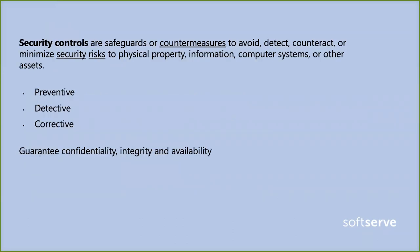Security controls are safeguards or processes that help you avoid, detect, and correct data breaches or attacks. There are three categories: preventive controls prevent security risks; detective controls identify when a security breach or problem has occurred; and corrective controls address what you do once a problem is detected — for example, locking down an unauthorized user who has accessed your data. These controls guarantee the confidentiality, integrity, and availability of all your data.